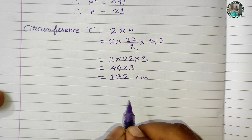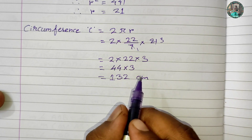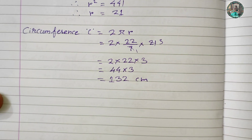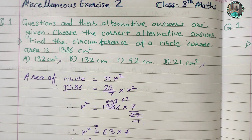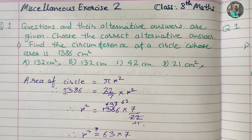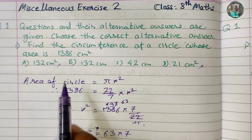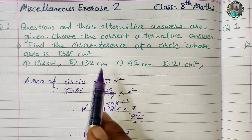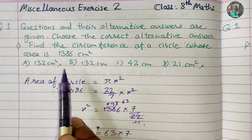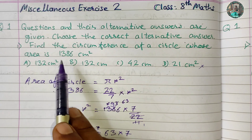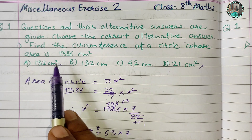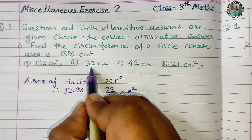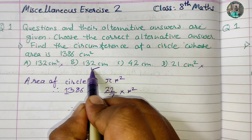And this is in centimeters. So what is the answer? 132 centimeters. The answer is 132 centimeters. The circumference is 132 centimeters.